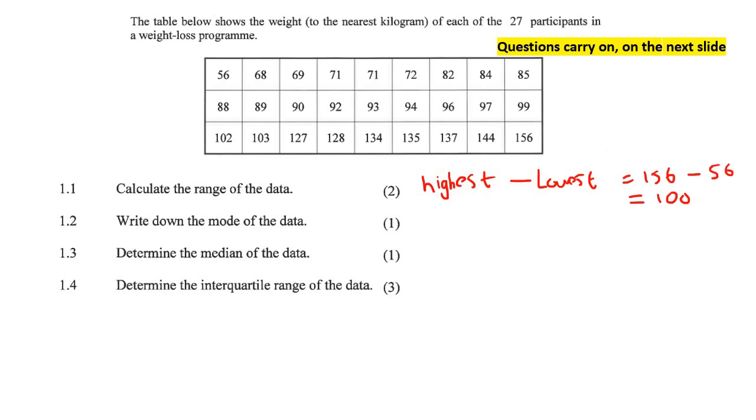Write down the mode. The mode is the value that appears the most, so it's the number that you see the most often. Let's have a look. I see that there are two 71s. Let's just see if there's any other numbers that are repeating. No, it's just that. So that would be the answer, 71.